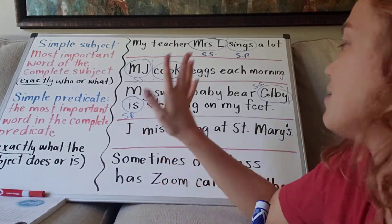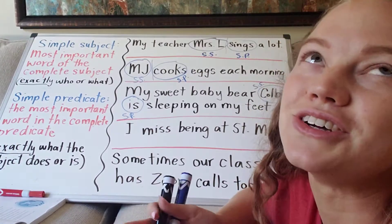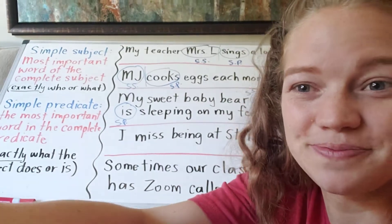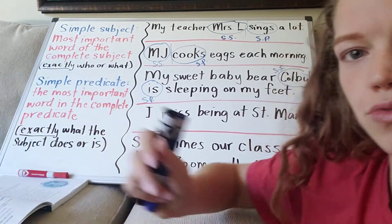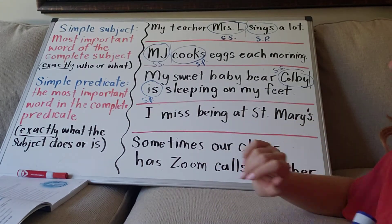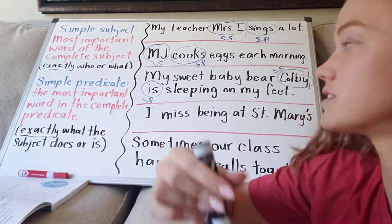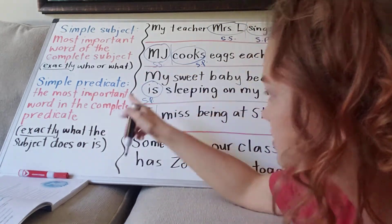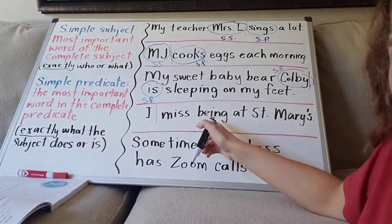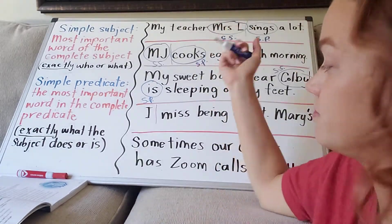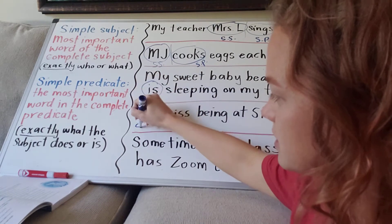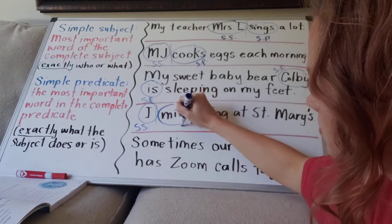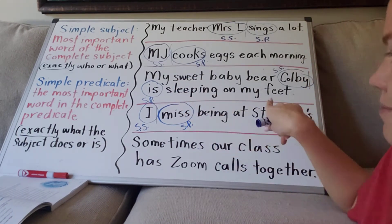Let's go on to the next one — a little easier. 'I miss being at St. Mary's.' To be clear, we're still St. Mary's right now; I just miss being at the school. This is another example of when the simple subject and complete subject overlap. The complete subject is 'I' and the complete predicate is 'miss being at St. Mary's.' Simple subject is easy — just 'I.' Simple predicate would be 'miss.' I miss being at St. Mary's — I miss.